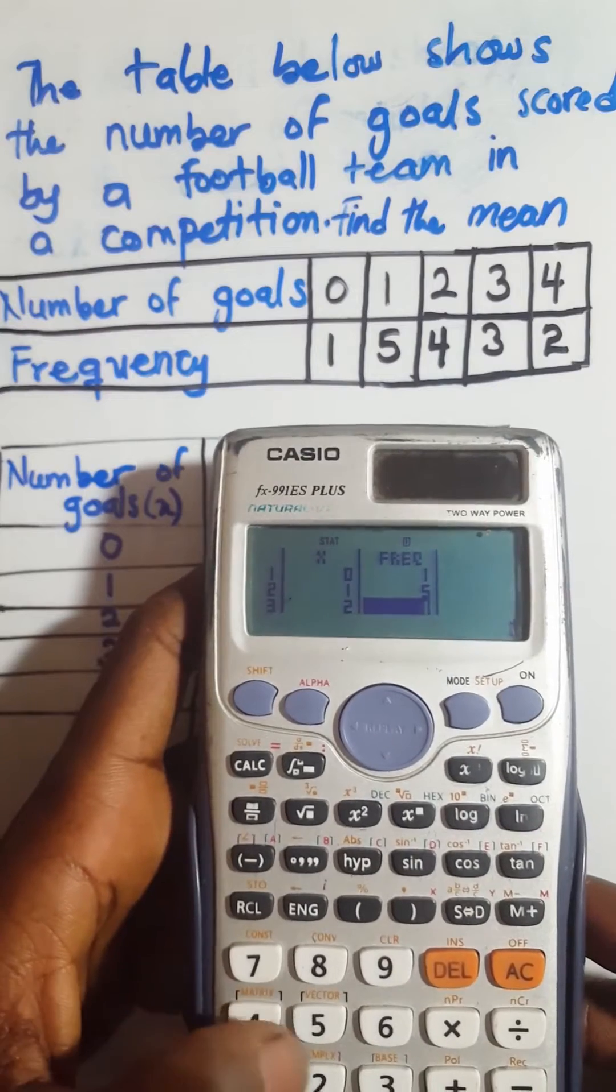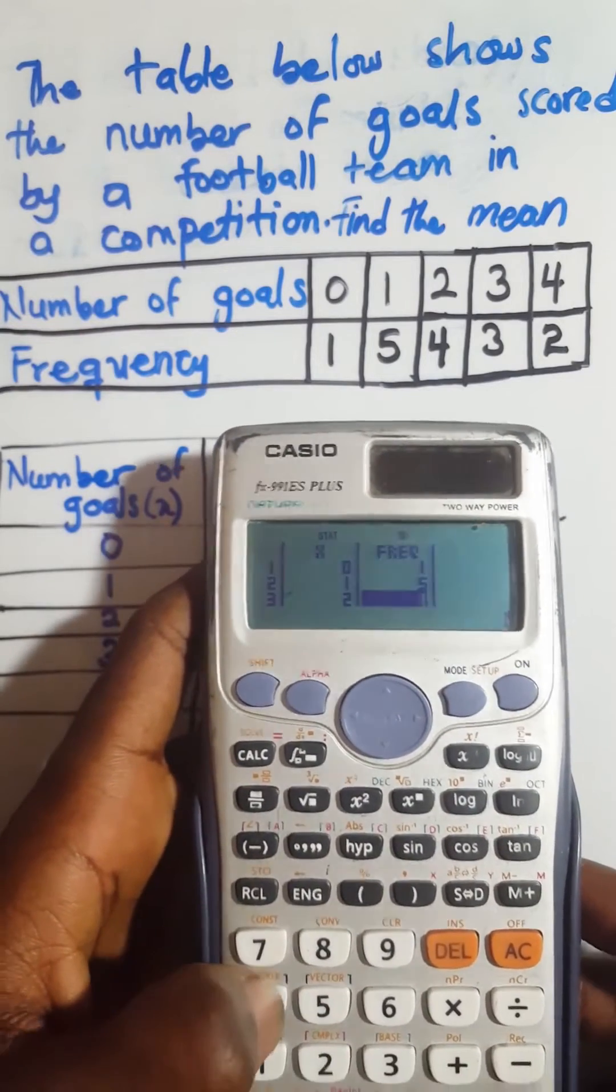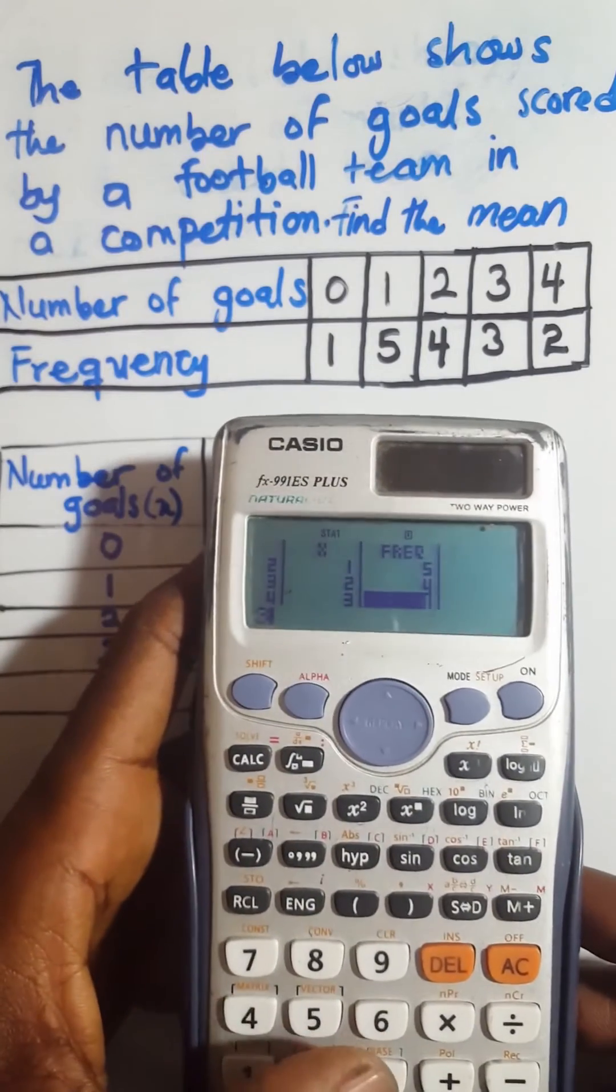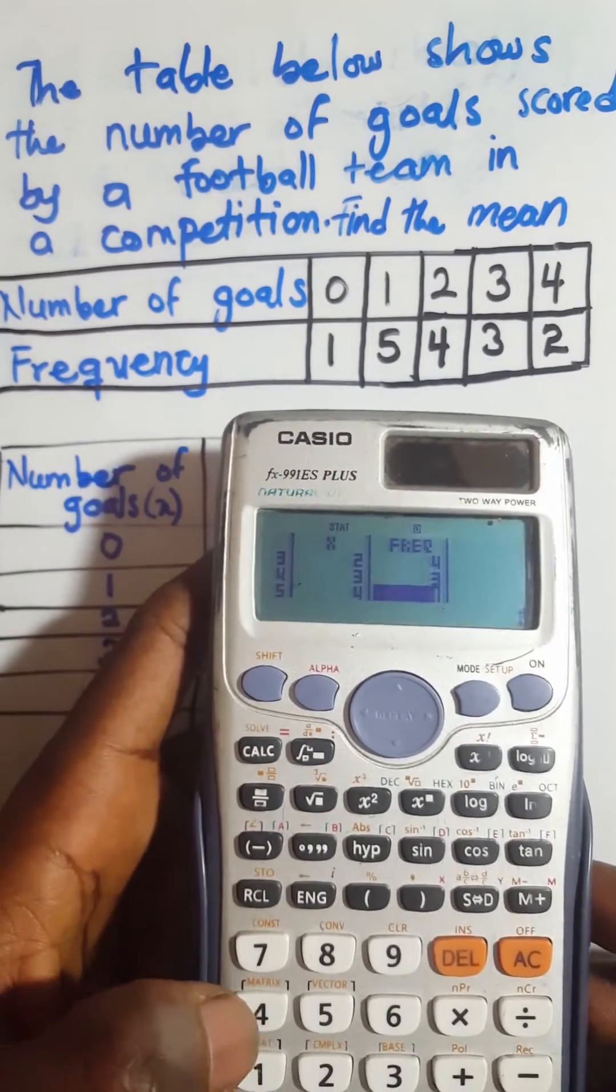The frequency of 1 is 5, you press 5, you press equal to. Then the frequency of 2 is 4, you press 4, you press equal to. Then the frequency of 3 is 3, so you press 3, you press equal to.